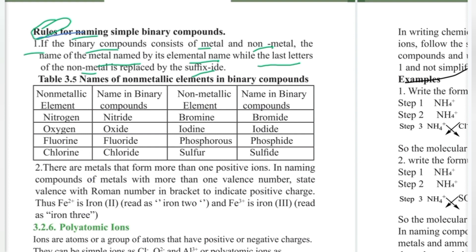The binary compound uses the name of the metal and non-metal element. The metal keeps its element name — for example, sodium, calcium, and lithium. The non-metal element uses the suffix '-ide'. If the metal does not change, you can use the '-ide' suffix for the non-metal.